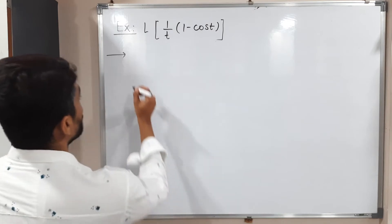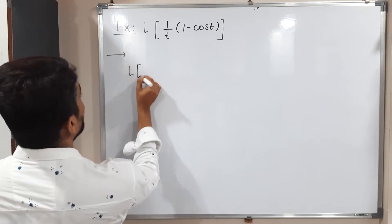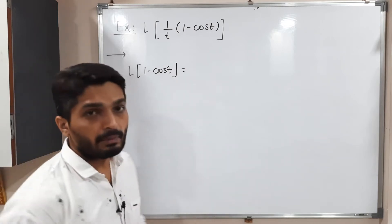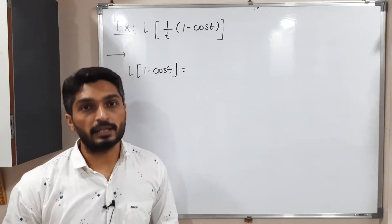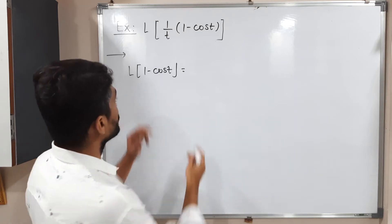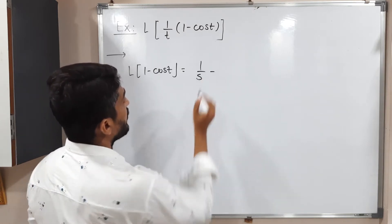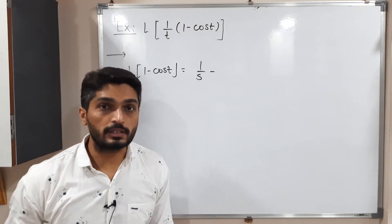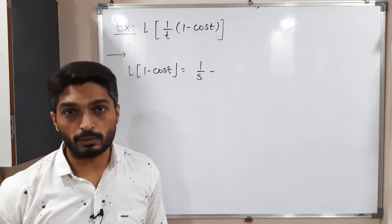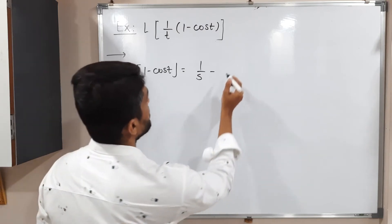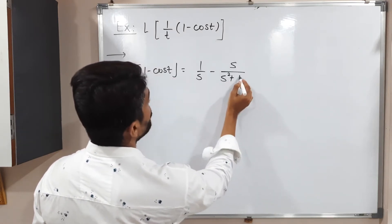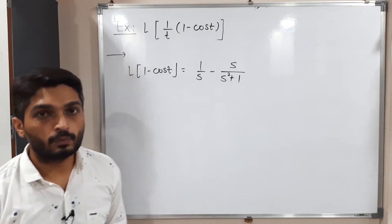Let us find the Laplace of one minus cos T. When a minus sign is there, we take separate Laplace. Laplace of one is one by S, minus Laplace of cos T. We have a standard formula: Laplace of cos AT is S upon S squared plus A squared. So its value is S upon S squared plus one, since A is one.